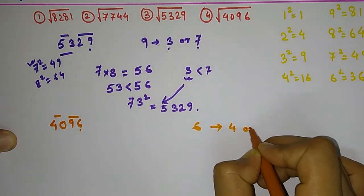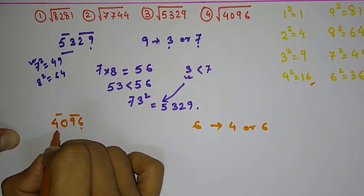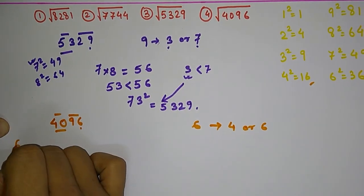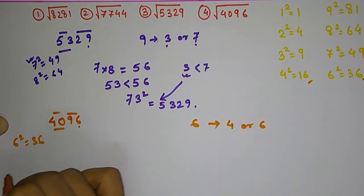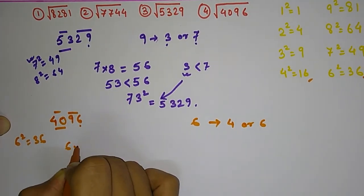For 40, we have 6 squared equals 36, which is nearer. So we are going to multiply 6 with the next digit, that is 7, which gives us 42.